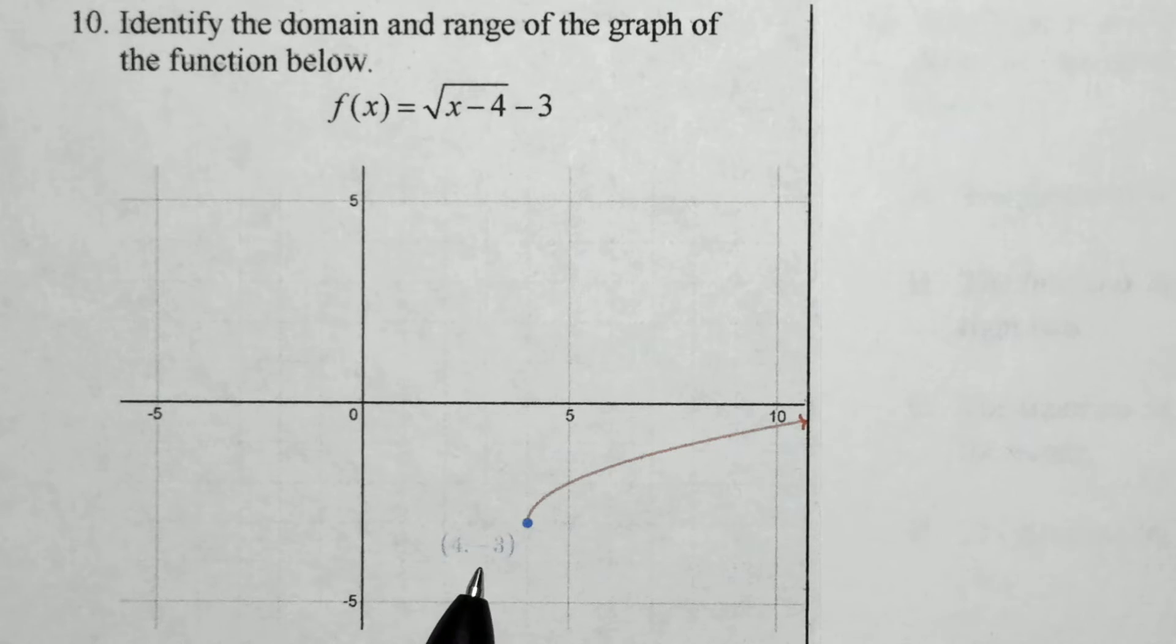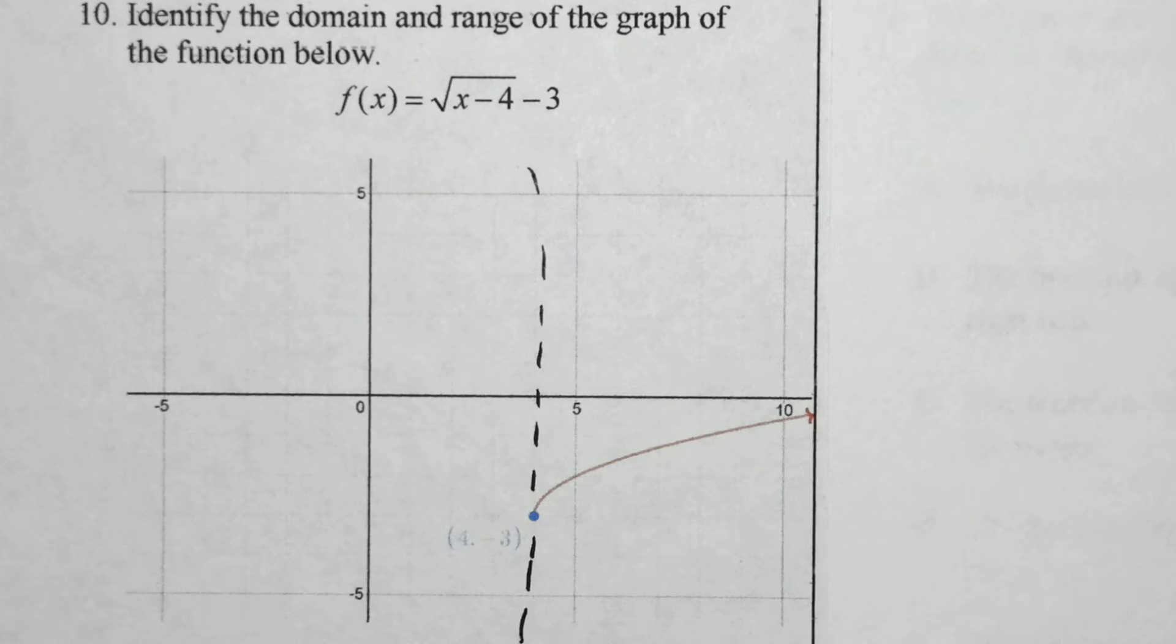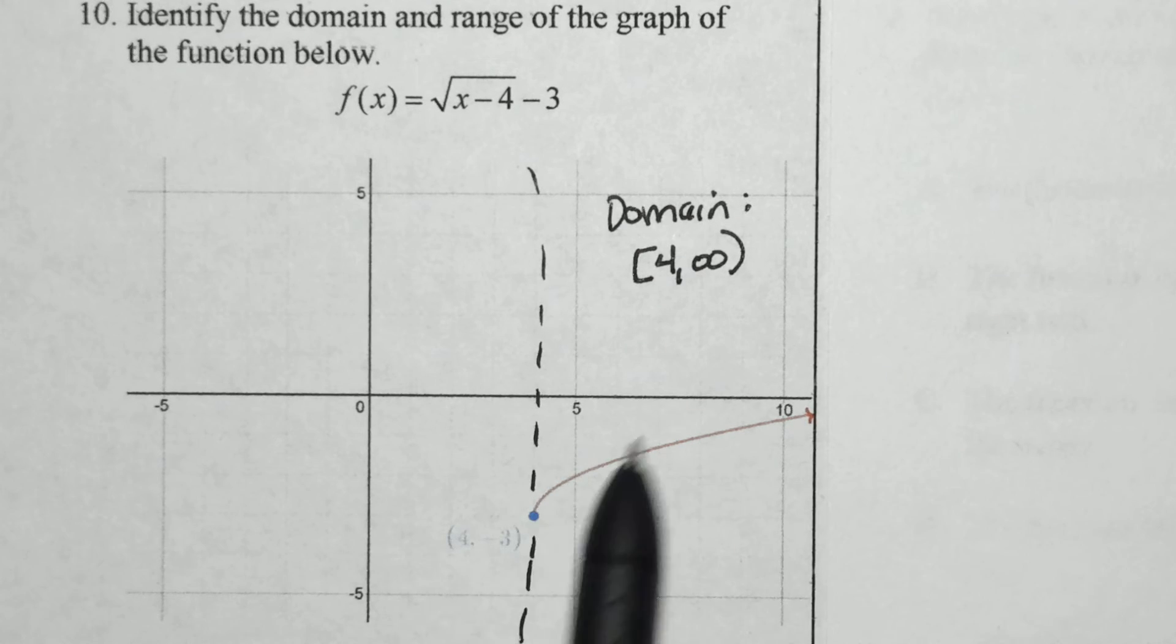Notice that 4, negative 3 here is the starting point. The function only occurs from 4 to the right. So we can describe the domain as it begins at 4, and then it moves to the right, and we mark it as to infinity, positive infinity, as there is no ending as it moves upward into the right.